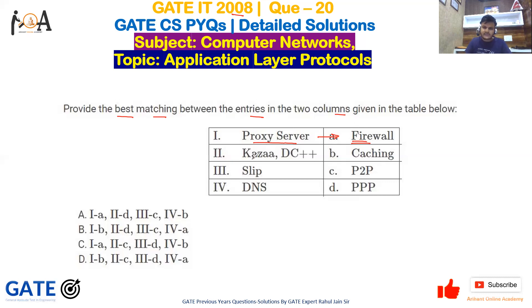The next one is Kazaa and DC++. These are software for downloading — basically open source software which is generally used for file sharing. They are peer-to-peer, P2P-based technologies.